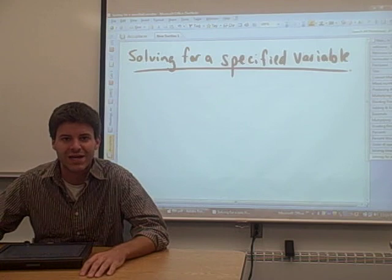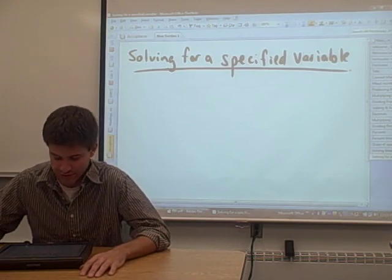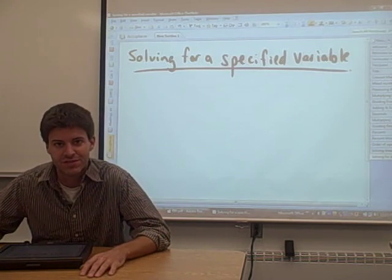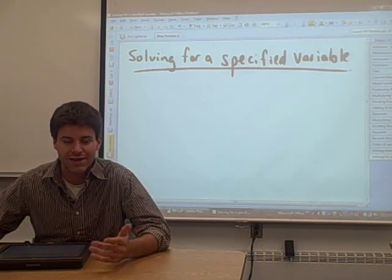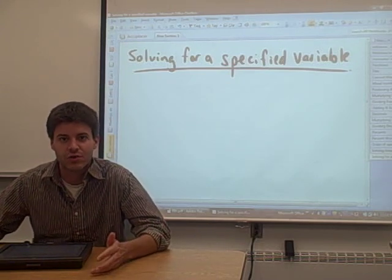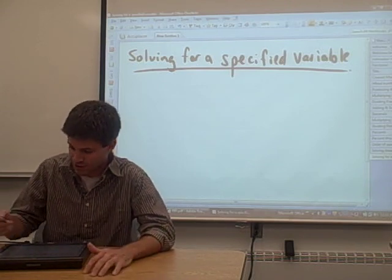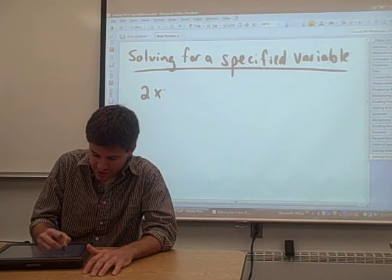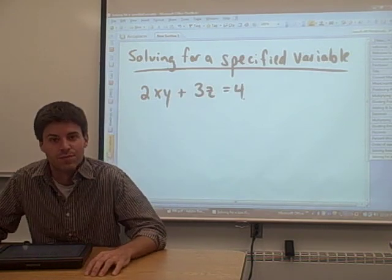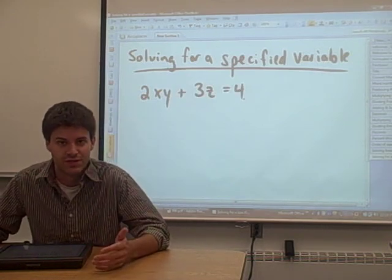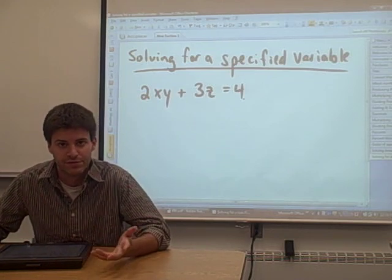Welcome to Math 090. In this section, we're going to talk about solving for a specified variable. In one of the Math 060 videos, I gave you a linear equation with just x's in it, and you had to solve for x. In this section, we're going to take an equation with multiple variables in it — x, y, and z in this case — and I'm going to ask you to solve for one of those variables.